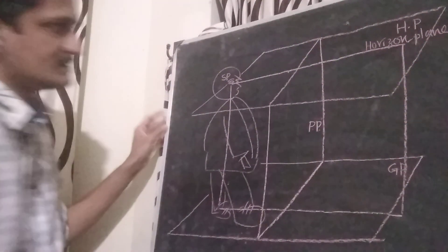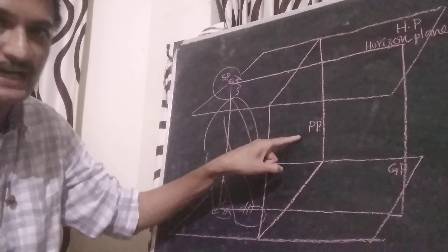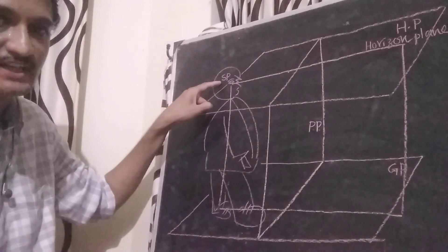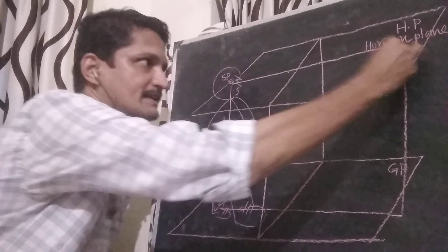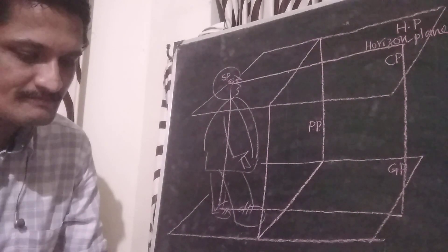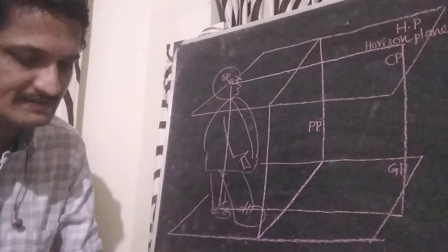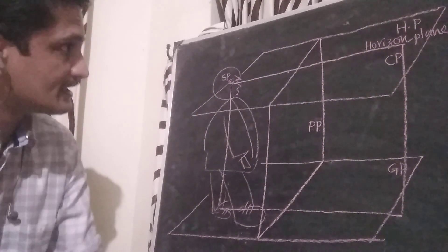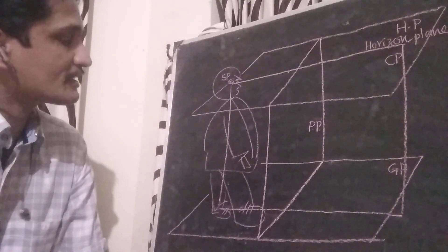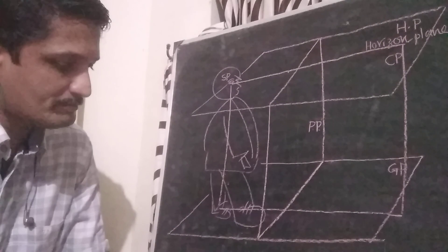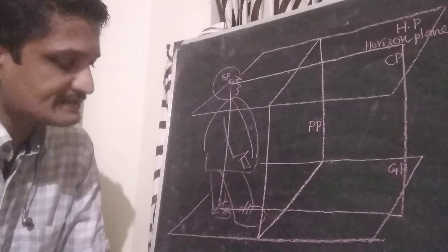A plane which is perpendicular to HP, GP, and PP and also passing through station point SP — that plane is known as central plane CP. Next, the axis of vision and center of vision.